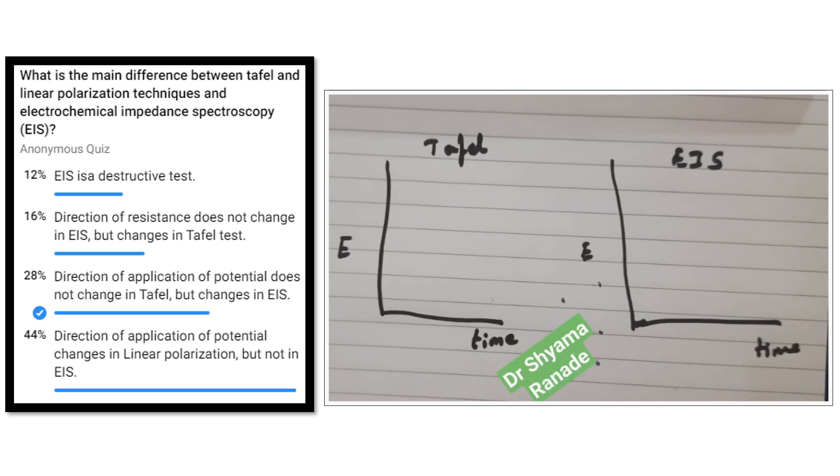The major difference is the linear polarization techniques are direct current techniques or the change in potential happens only in one certain direction.